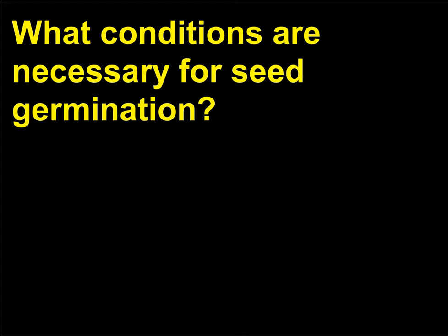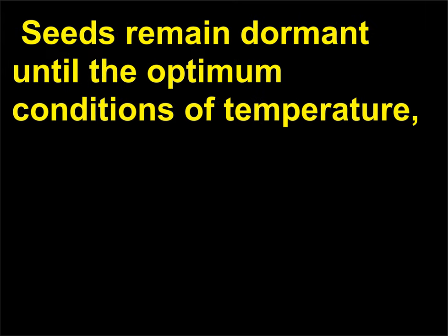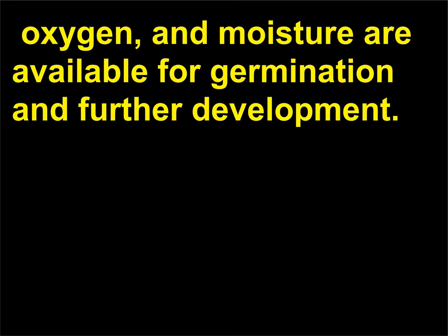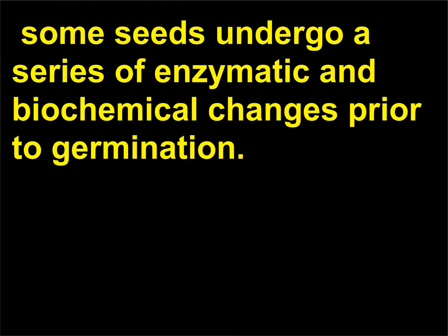What conditions are necessary for seed germination? Once the seed is protected and enclosed in a seed coat, it ceases further development and becomes dormant. Seeds remain dormant until the optimum conditions of temperature, oxygen, and moisture are available for germination and further development. In addition to these external factors, some seeds undergo a series of enzymatic and biochemical changes prior to germination.